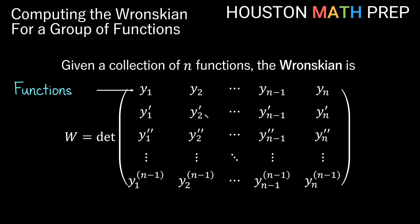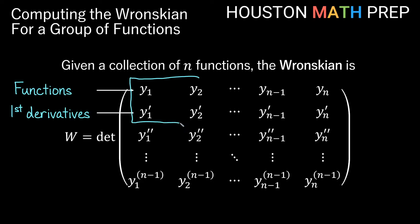For our second row of the square matrix, that will be filled with the first derivatives of all the original functions. It's important that your first function — you keep all of its derivatives beneath it, and the second function in your collection, you keep all of its derivatives directly beneath it. We make sure we don't swap any of these. For those using Wronskians to solve second order equations, you'll have y1 and y2, and you'll stop after the first derivative step, giving you four entries in your 2×2 matrix.